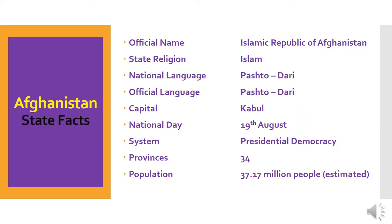Here is some basic information about Afghanistan. Official name: Islamic Republic of Afghanistan. State religion: Islam. National language: Pashto, Dari. Official language: Pashto, Dari. Capital: Kabul. National day: 19th August. System: presidential democracy. Provinces: 34. Population: 37.17 million people, estimated.